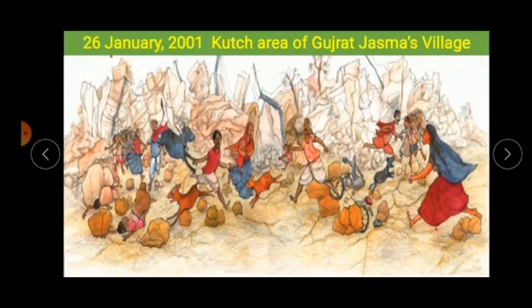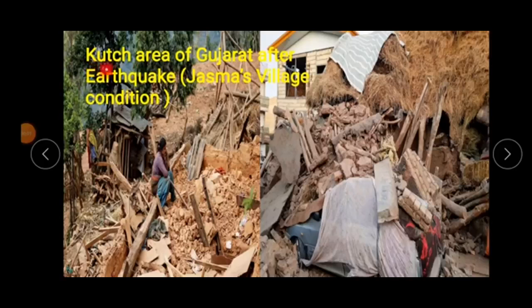No one knew what was happening or what to do. There was total panic — people were running here and there, surprised by what had happened. Look at the condition of Jasma's village after the earthquake: nothing was left. Everything was destroyed in just a few minutes and the village was flat on the ground.